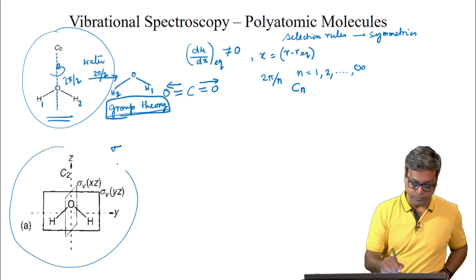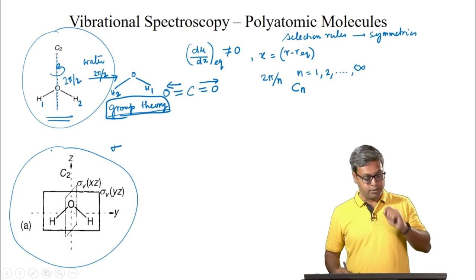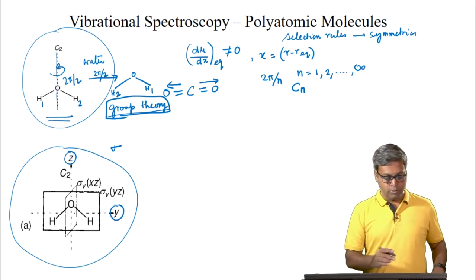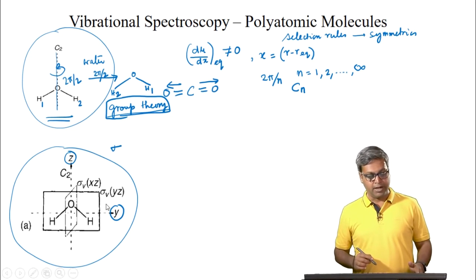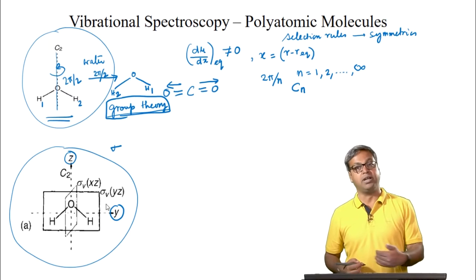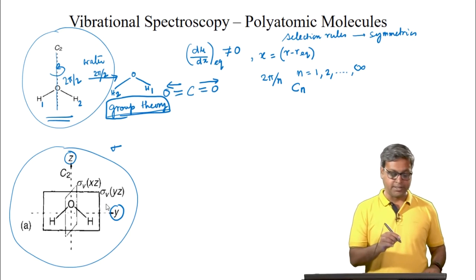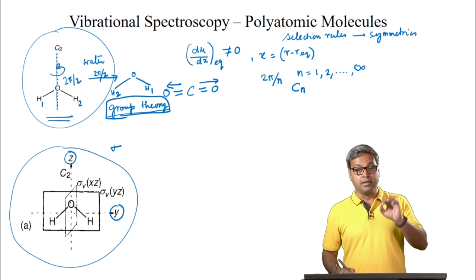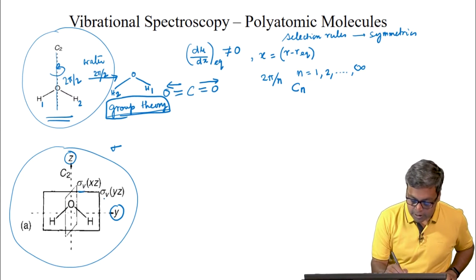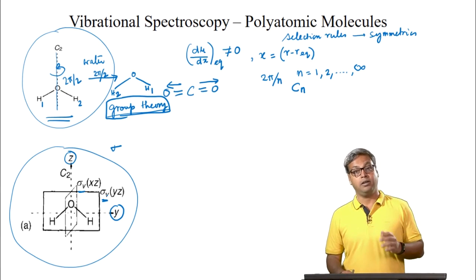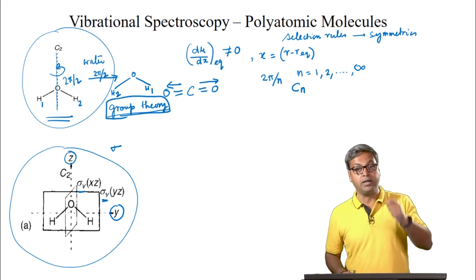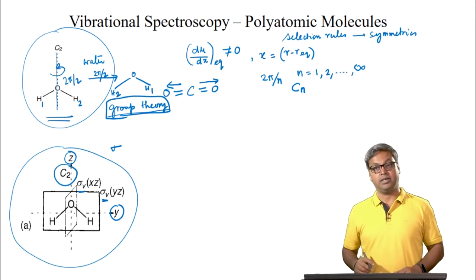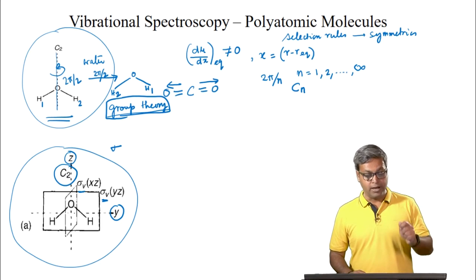In this figure the axes are labeled. We have the z-axis and the y-axis. Water is a planar molecule; the vertical axis in this plane is the z-axis and the horizontal axis is the y-axis. The axis going below and above the plane of the vertical axis is the x-axis. The subscript V in sigma stands for vertical, which implies that the plane is vertical with respect to the highest-fold axis, that is the C₂ axis or the z-axis in this case, and this defines the vertical direction.